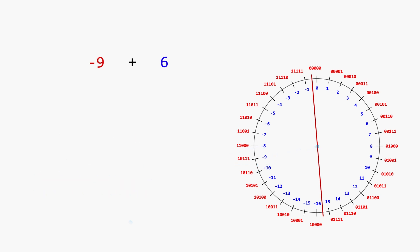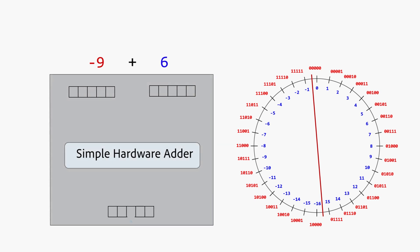Let's see what will happen if the hardware treats these two inputs as unsigned numbers. If these binary bits represent unsigned numbers, they are 23 and 6 respectively.